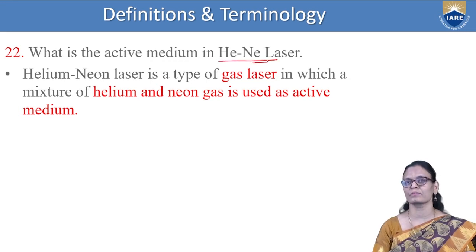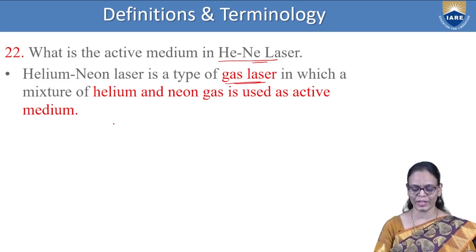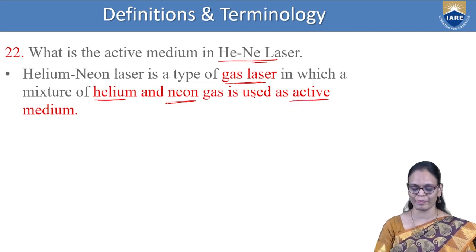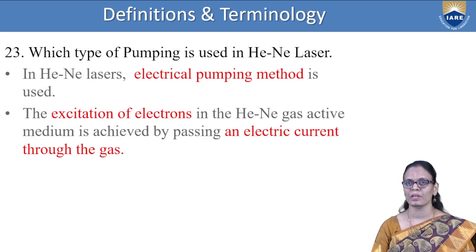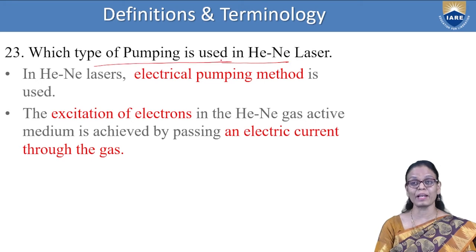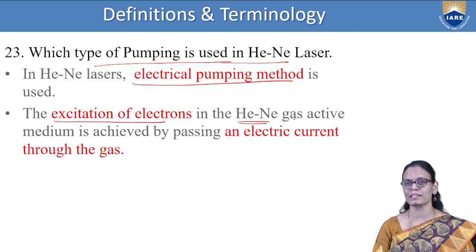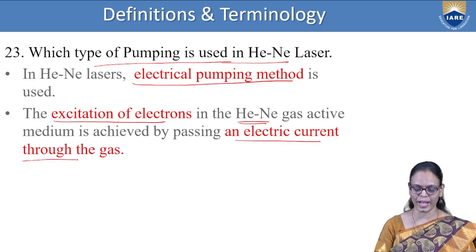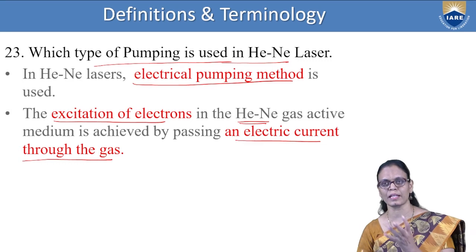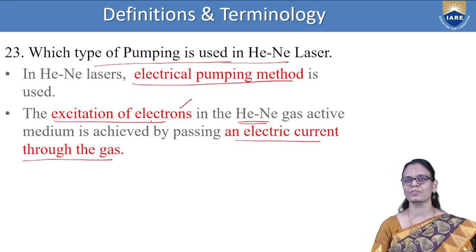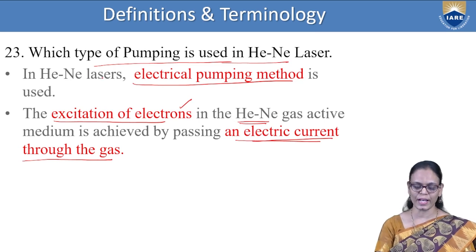What is the active medium in a helium-neon laser? Helium-neon laser is a gas laser. In this gas laser, we use helium and neon gas as the active medium. Which type of pumping is used in helium-neon? In helium-neon laser, we use electrical pumping — the excitation of electrons in the helium-neon gas is achieved by passing an electric current through the gas. When we pass electric current, the helium-neon gas absorbs the energy and goes to the excited state, so we call it the electrical pumping method.